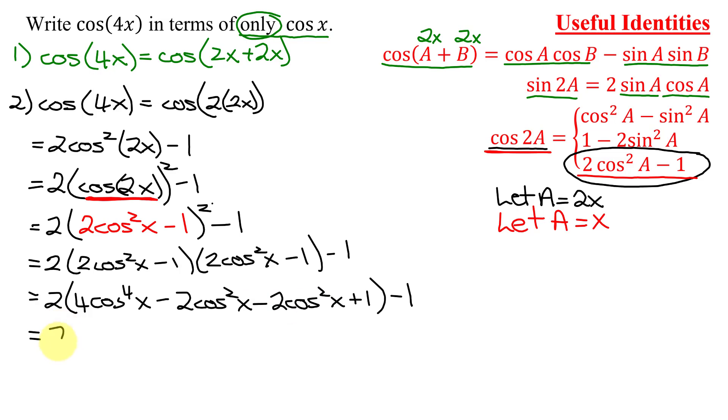Adding up like terms in my parentheses, I'm going to get 4 cosine to the 4th x. Negative 2 added to negative 2 is negative 4 cosine squared x plus 1. And then don't forget the minus 1 on the end.